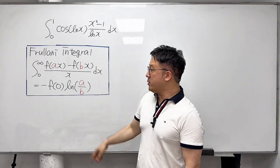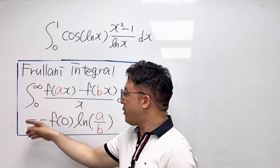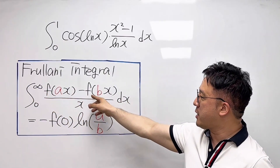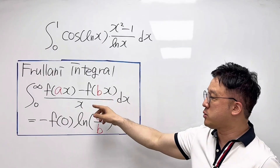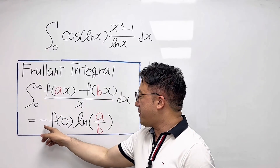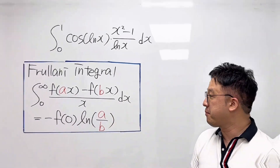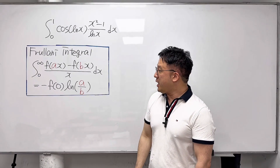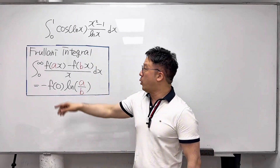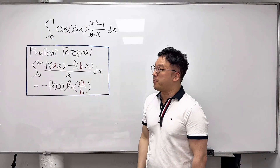For this integral, we'll be using the Frullani integral. That is: the integral from 0 to infinity of [f(ax) minus f(bx)] over x dx, which equals negative f(0) times ln(a/b). In order to use this Frullani integral, we'll be working on the lower and upper bounds and also adjusting the integral.